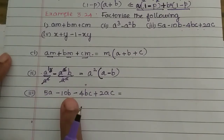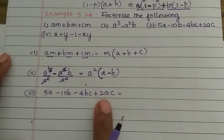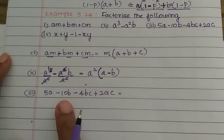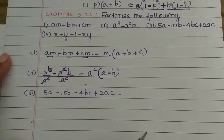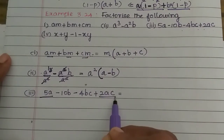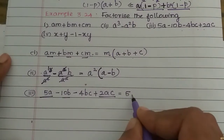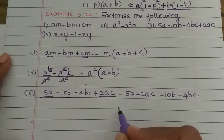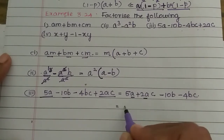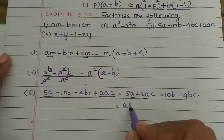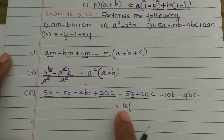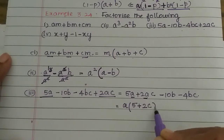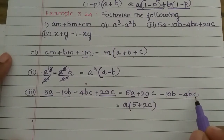Next: 5a minus 10b minus 4bc plus 2ac. There are 4 terms. A is not in all terms and B is not in all terms, so we need to group. A is in 5a and 2ac — that is one group: 5a plus 2ac. B is in minus 10b and minus 4bc — that is the other group: minus 10b minus 4bc. In the first group, A is common.